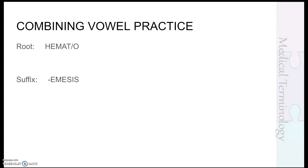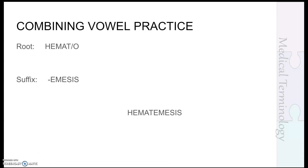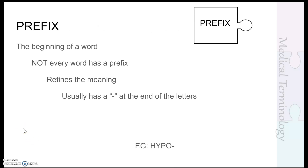Let's try one more. The root term is 'hemato,' which means blood — again identified by the backslash and the O. The suffix to combine it with is '-emesis,' which means vomiting. The suffix '-emesis' starts with a vowel, so we drop the combining vowel. The correct spelling is 'hematemesis' — not 'hematoemesis.' We drop the O because the suffix starts with a vowel.